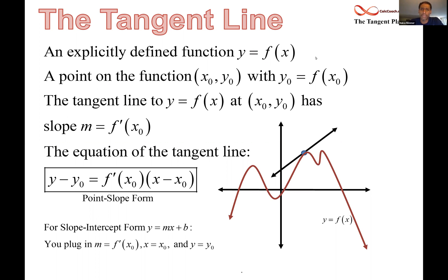You plug in f prime of x naught as your m, x equals x naught and y equals y naught, and you solve for b. That's how you really did it. So now, to make sure we understand tangent planes, what we do is we take this and we make it 3D.